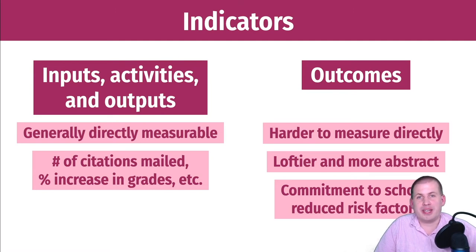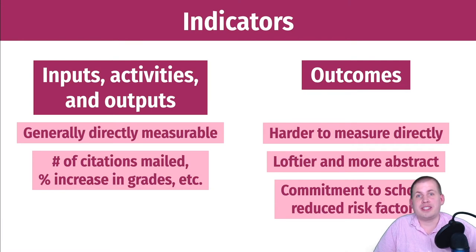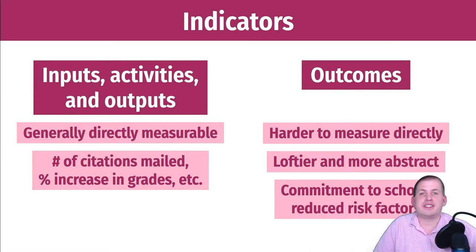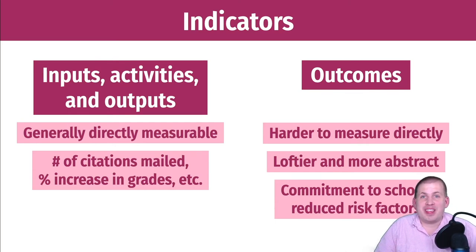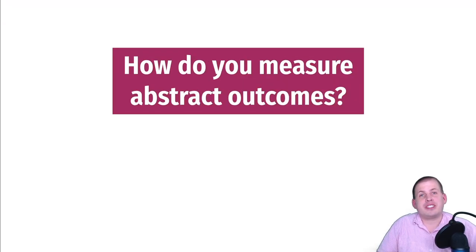How can you tell if the program improved commitment to school? You could say attendance measures that, but lots of people go to school who aren't really committed - they're just going because they're going. So actual attendance records don't really pick up commitment to school. Maybe instead you could have a survey and ask kids how committed to school they are on a scale of 1 to 10, but is that really going to capture anything? Maybe, maybe not. These types of things are a lot harder to measure, and that brings us to the main question: how do you actually measure these abstract outcomes?